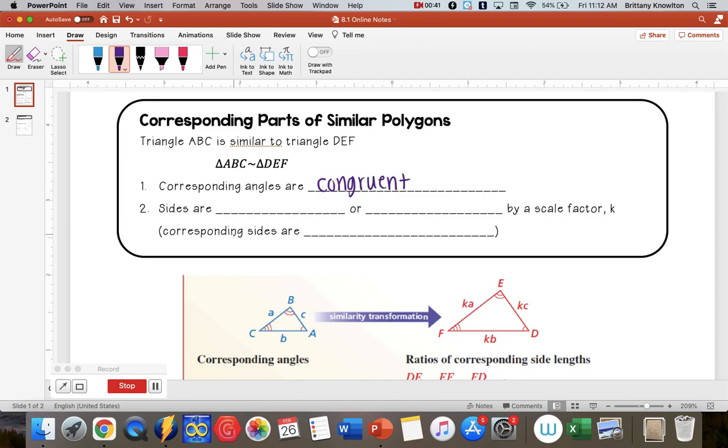And the second thing is that the sides are going to be either enlarged or reduced by a scale factor K. In other words, the corresponding sides are proportional.